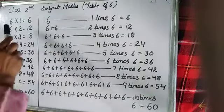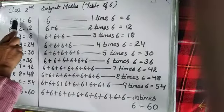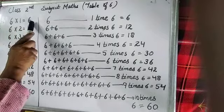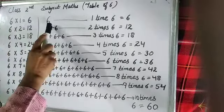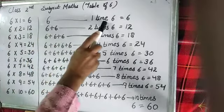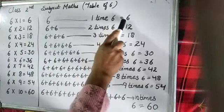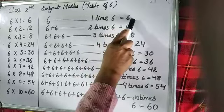Now look here. 6 1s are 6. It means 1 times 6 is equal to 6.